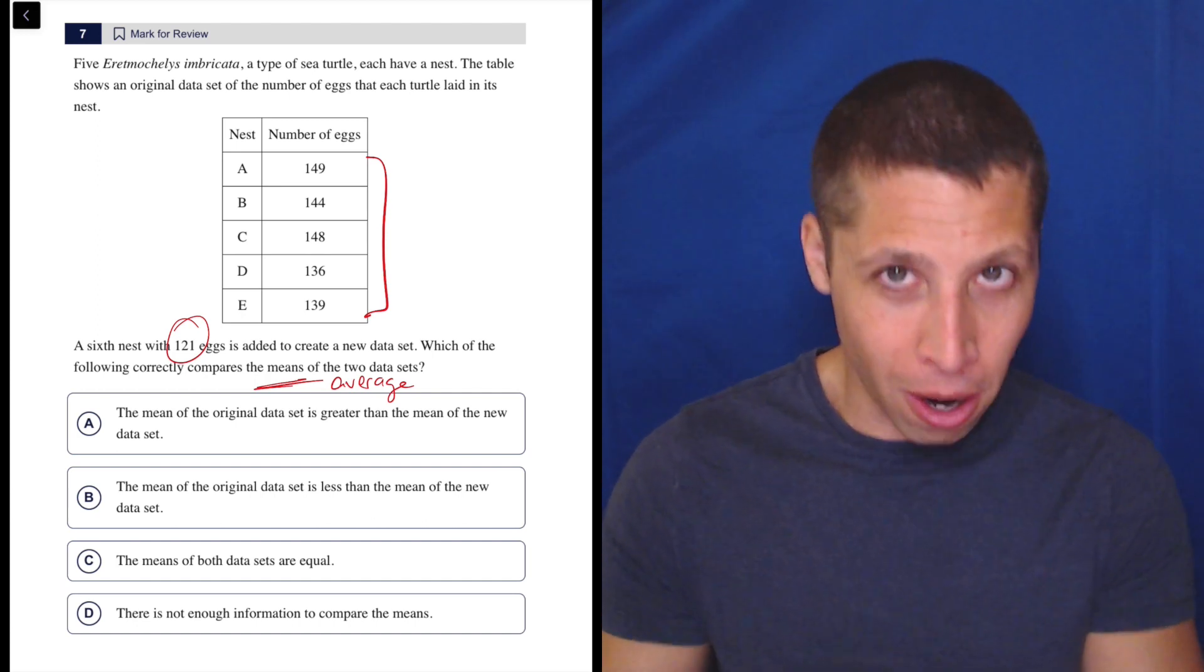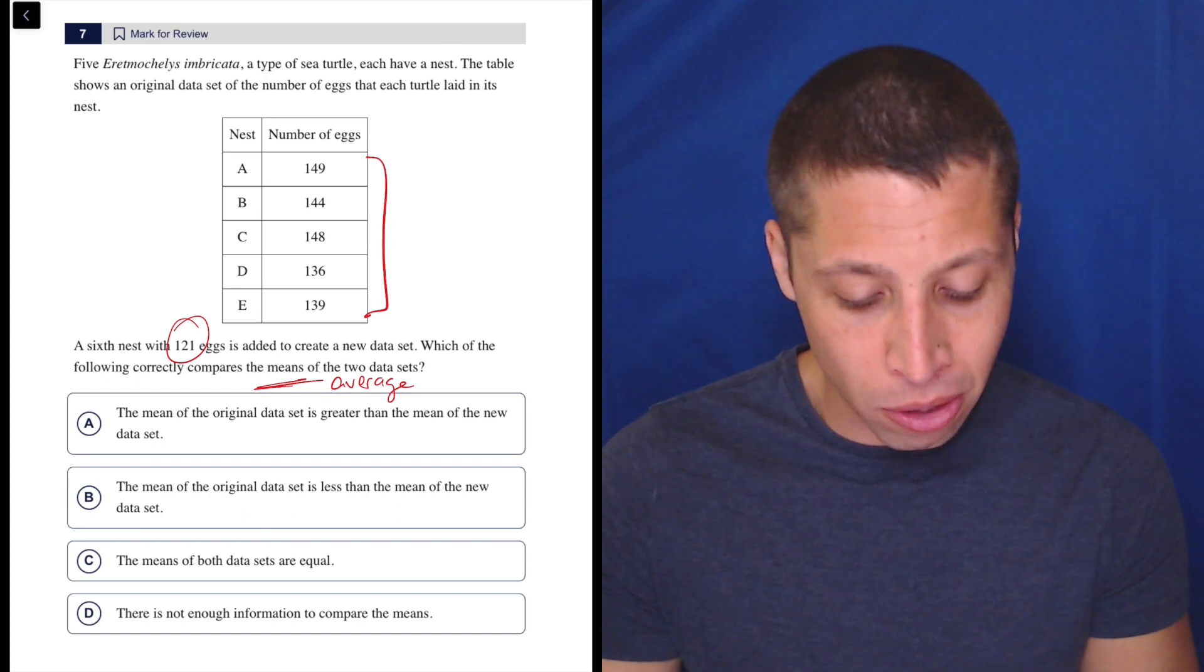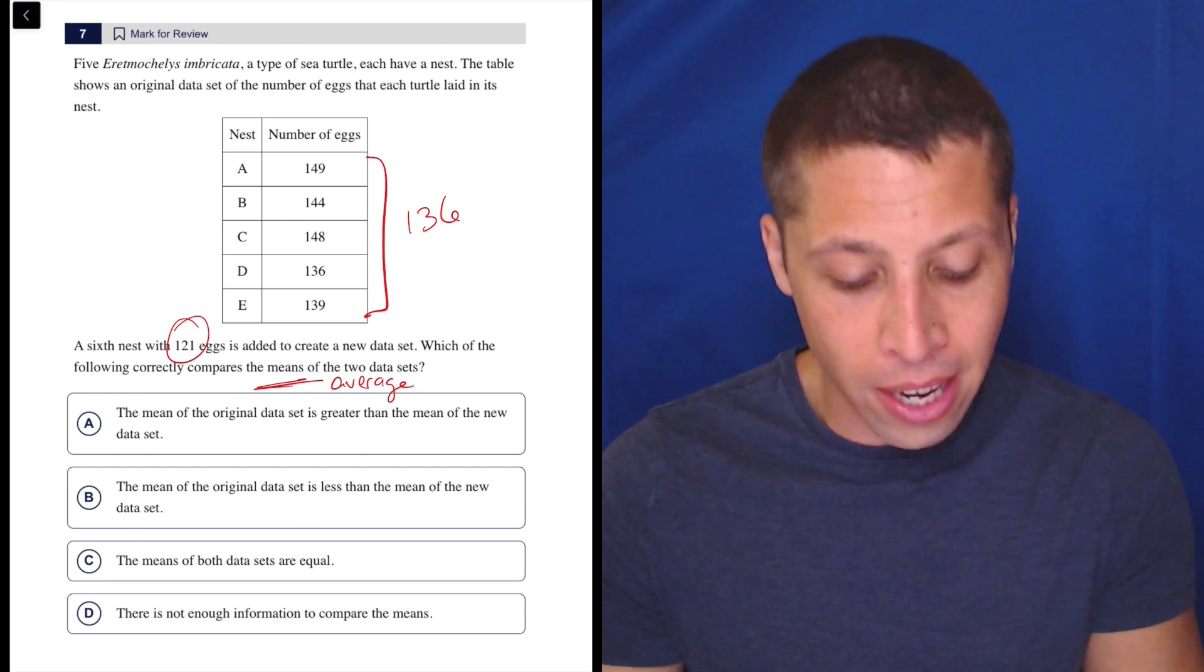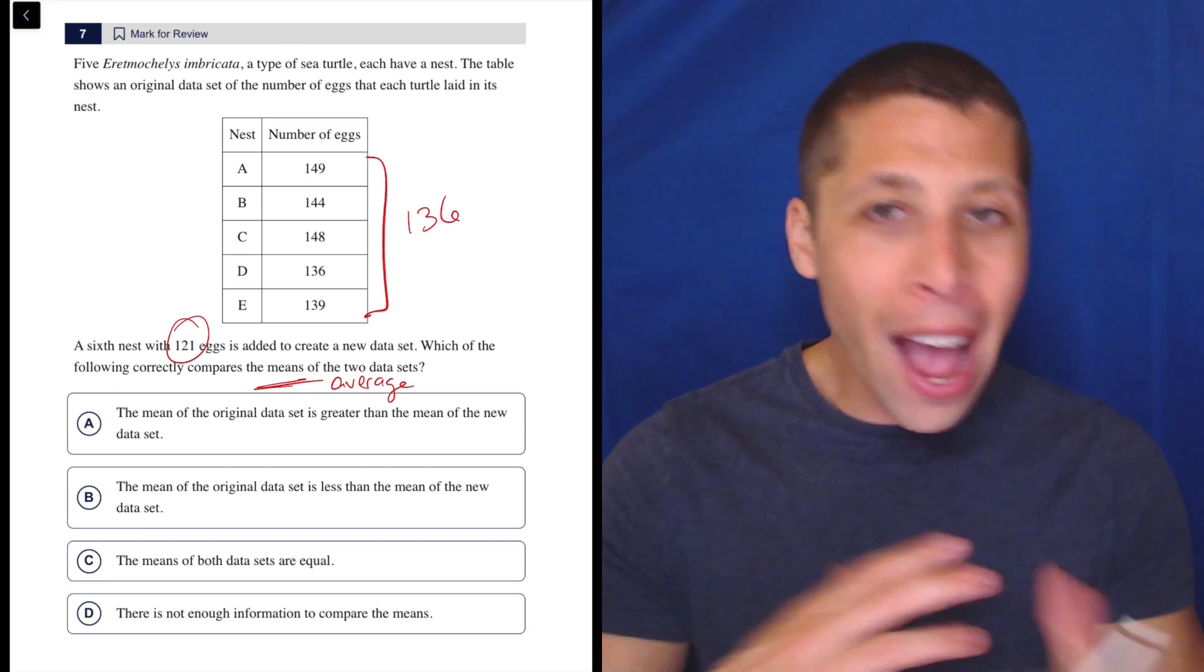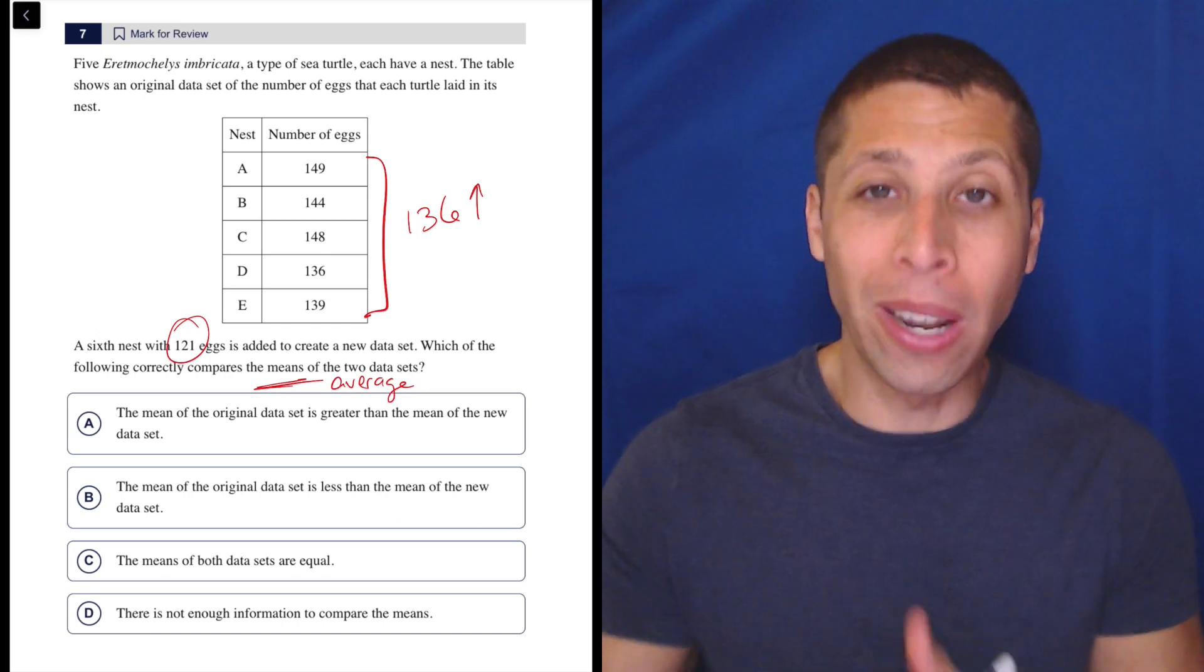But if you're smart and you know what's up here, you're not going to have to do that. Because look at the set of first five numbers. The lowest number is 136. So the average is going to be higher than that.